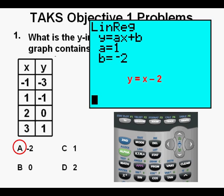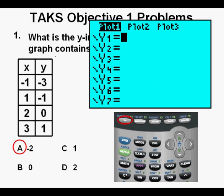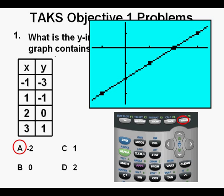So it can be written as y equals x minus 2. We can go back to the function editor by pressing the Y= key at the upper left. Then we can enter our equation y equals x minus 2 in Y1. The X key is highlighted on the keypad image.